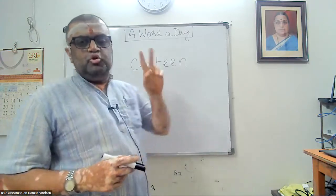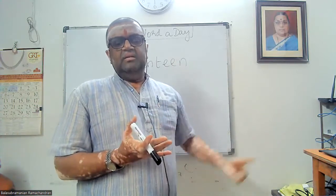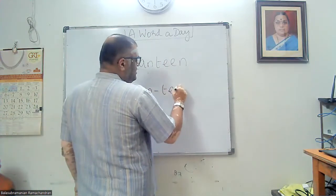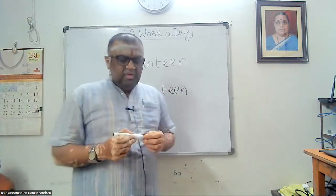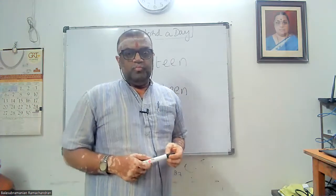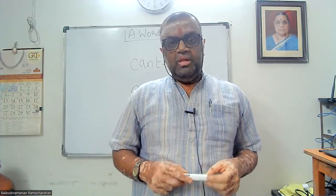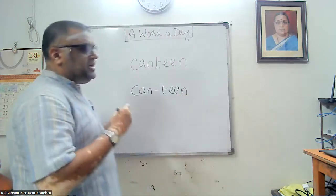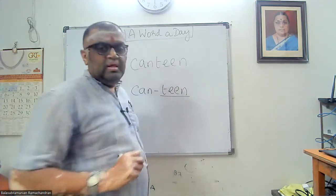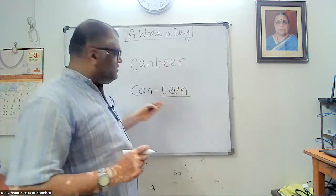The word divides itself into two syllables — syllable one: 'can,' syllable two: 'teen.' This is how we show the division. Now please listen to my pronunciation: canteen, canteen, canteen. Notice that the second syllable is stressed — canteen.